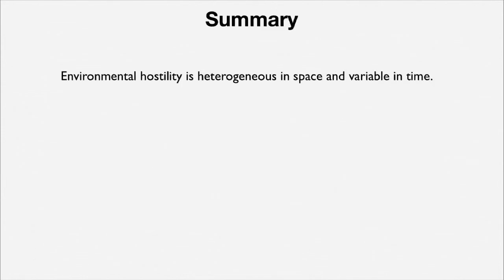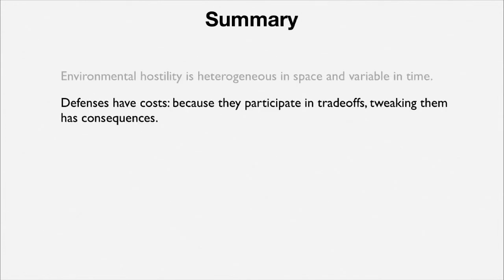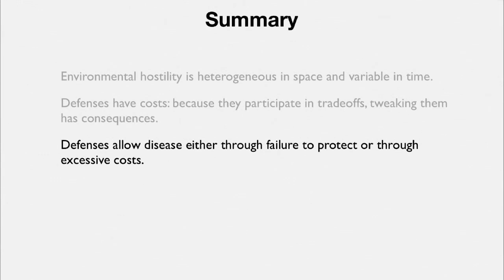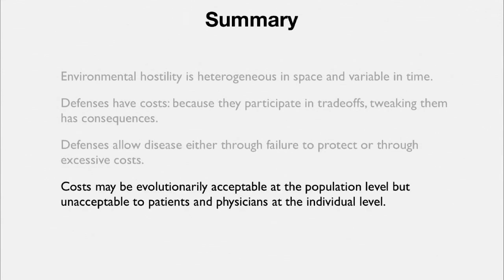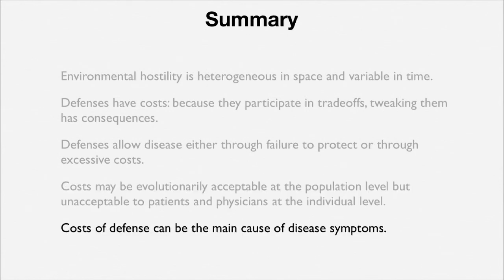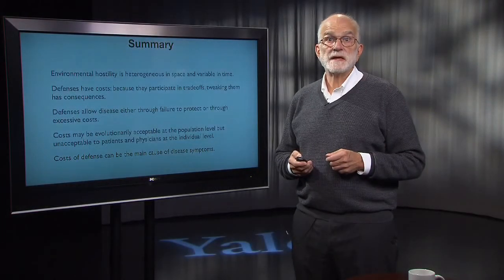To summarize: environmental hostility is heterogeneous in space and time. Defenses have costs, and because they participate in trade-offs, tweaking defenses has consequences. Defenses allow disease either because they fail to protect or because their costs are excessive due to shifts in cost-benefit ratios. Costs may be evolutionarily acceptable at the population level, but unacceptable to patients and physicians at the individual level. The cost of defense can be the main cause of disease symptoms, and in upcoming lectures we will see some dramatic examples.